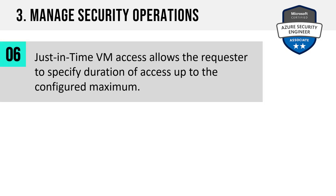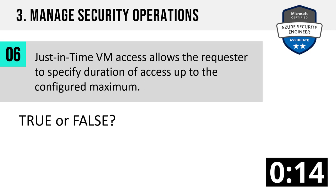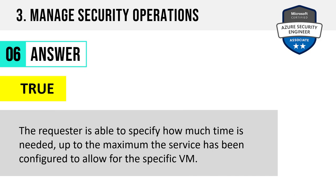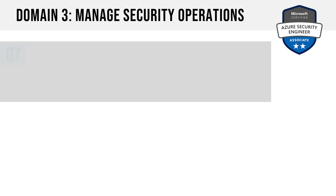Number 6. Just-in-time VM access allows the requester to specify duration of access up to the configured maximum. True or false? The answer is true. The requester is able to specify how much time is needed up to the maximum the service has been configured to allow for a specific VM. If a VM has been configured to allow JIT access up to eight hours, the requester can specify eight hours or dial it down to a lower value.